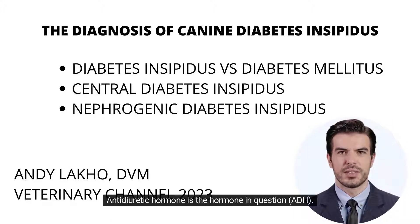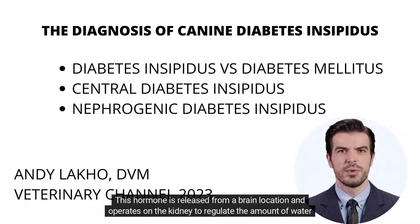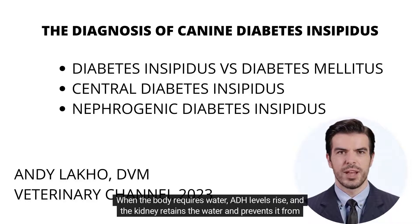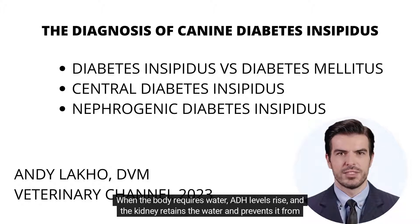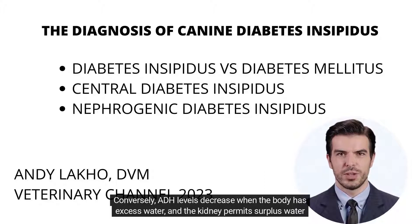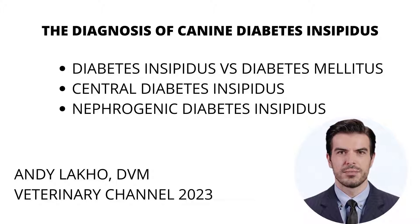Antidiuretic hormone, ADH, is the hormone in question. This hormone is released from a brain location and operates on the kidney to regulate the amount of water excreted in the urine. When the body requires water, ADH levels rise and the kidney retains the water and prevents it from being passed through the urine. Conversely, ADH levels decrease when the body has excess water and the kidney permits surplus water to pass into the urine.